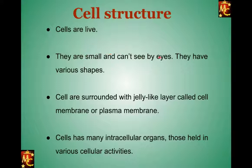Cells are small and cannot be seen by the naked eye. Cells are usually a few micrometers, like 10 to 20 micrometers; some may be 50 or 100 micrometers, but this size is very small. One micrometer is 10 to the power of negative 6 meters, or one millionth part of a meter. To see cells we need a microscope because they are so small, and they have various shapes.